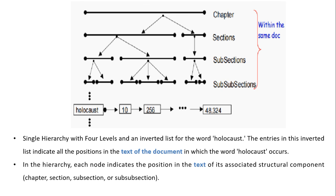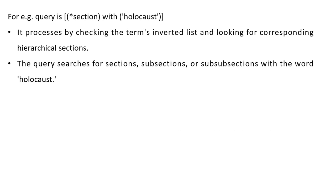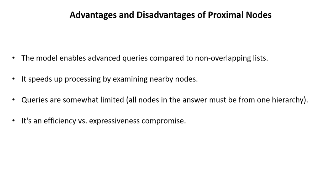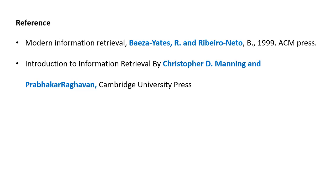Advantages and disadvantages of proximal nodes: the model enables more advanced queries compared to the non-overlapping list model. It speeds up processing by examining nearby nodes. However, queries are somewhat limited in that all nodes in the answer must come from one hierarchy. It is an efficiency versus expressiveness compromise — providing answers from multiple hierarchies would require more processing time. This concludes the topic of structuring models in the modeling of information retrieval.